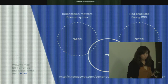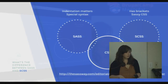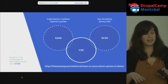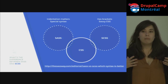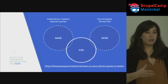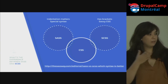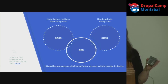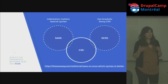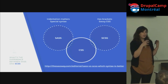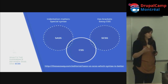SCSS was created to solve the problem of moving from CSS to Sass, making it easier to take existing files and turn them into Sass files. Both .sass and .scss compile into CSS, and to do that you need a compiler.